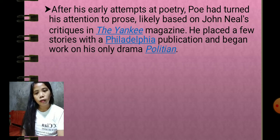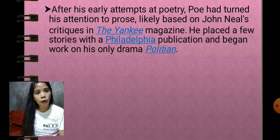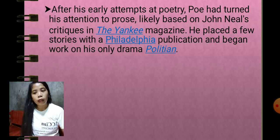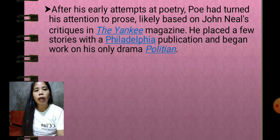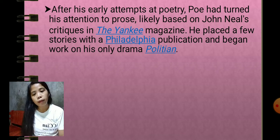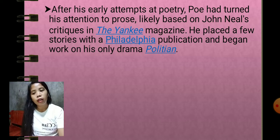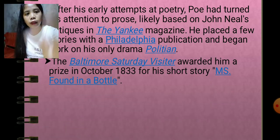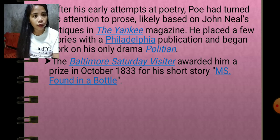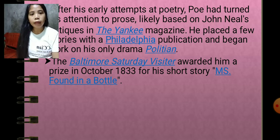After attempting poetry, Poe turned his attention to prose, likely based on critics from Yankee magazine. He placed a few stories with a Philadelphia publication and began work on his only drama, 'Politician.' The Baltimore Saturday Visitor awarded him a prize in October 1833 for his short story 'MS. Found in a Bottle.'